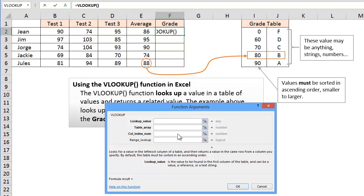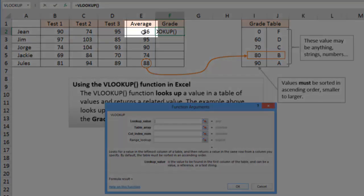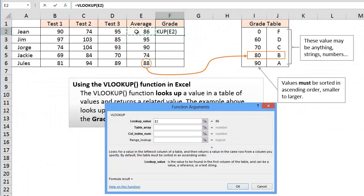The lookup value is the value we want to actually look up in the table. And in this case the lookup value is going to be the average. So I am just going to click on this cell E2 here for the average. And that is the value we are going to look up.